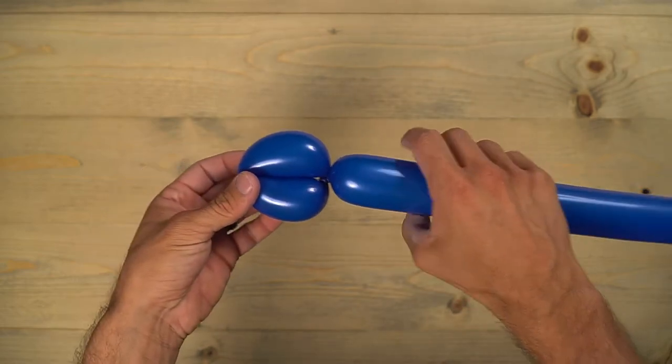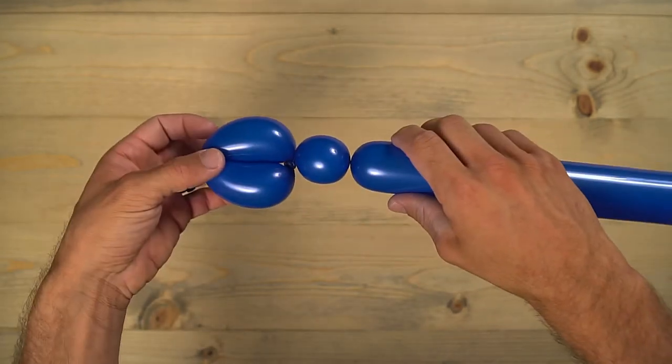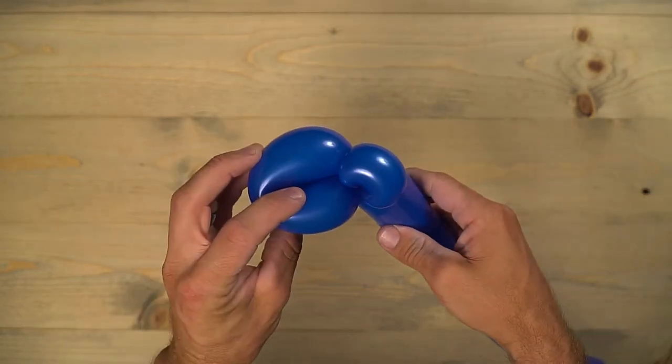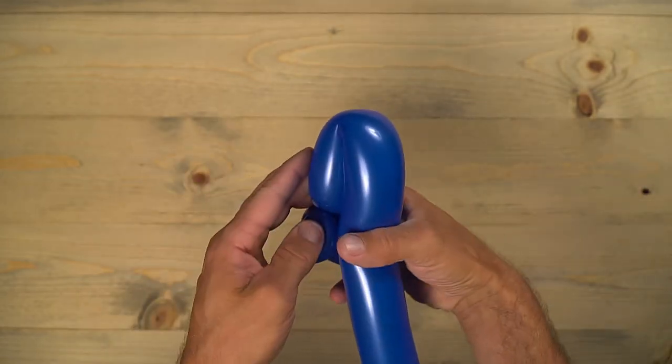Next you're going to do a one-inch bubble and pinch twist that. And then make another loop twist, same size as the one you started out with.